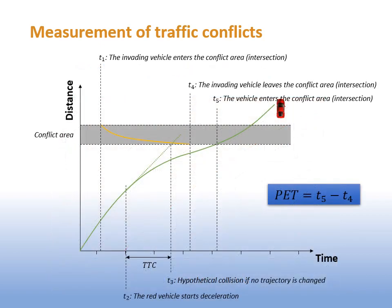The other traffic conflict technique is the post-encroachment time. It is defined as the time between the end of the encroachment of the first vehicle and the occupation of that space by the second vehicle. It is a strong measure of how close the conflict was.